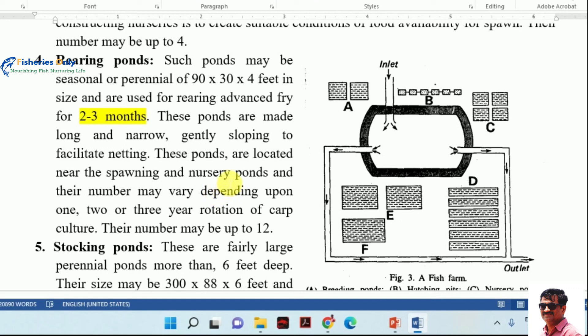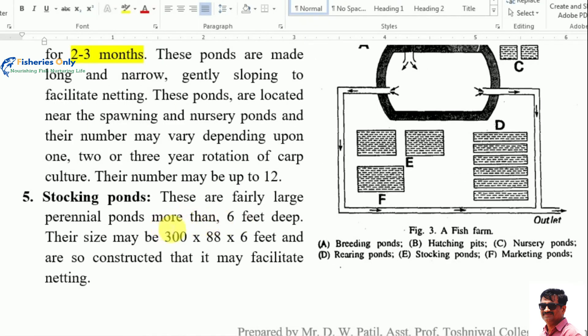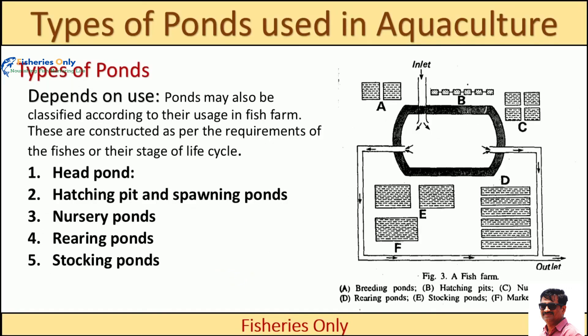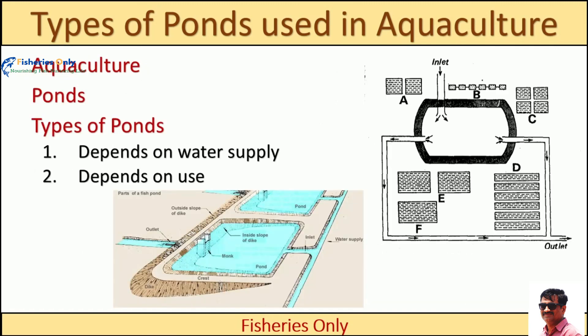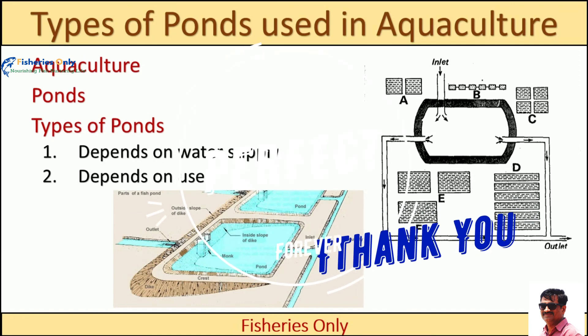Rearing ponds may have around 12 units. Stocking ponds are fairly large perennial ponds, up to 1 hectare and 6 feet deep, with sizes of 300×288×6 feet, used to stock and grow fish up to harvest. After stocking ponds, there may also be marketing ponds. If you like this video, please subscribe, promote the channel, and share the video. Thank you.